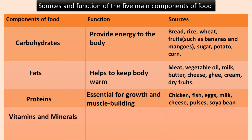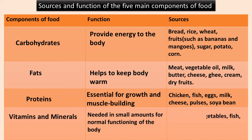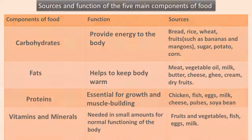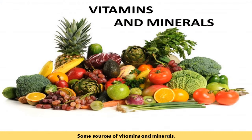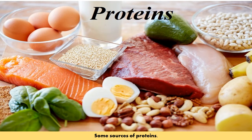Vitamins and minerals are needed in small amounts for the normal functioning of the body. Sources include fruits and vegetables, fish, eggs, and milk. Let us see the sources of each type of component: sources of carbohydrates, vitamins and minerals, proteins, and fats.